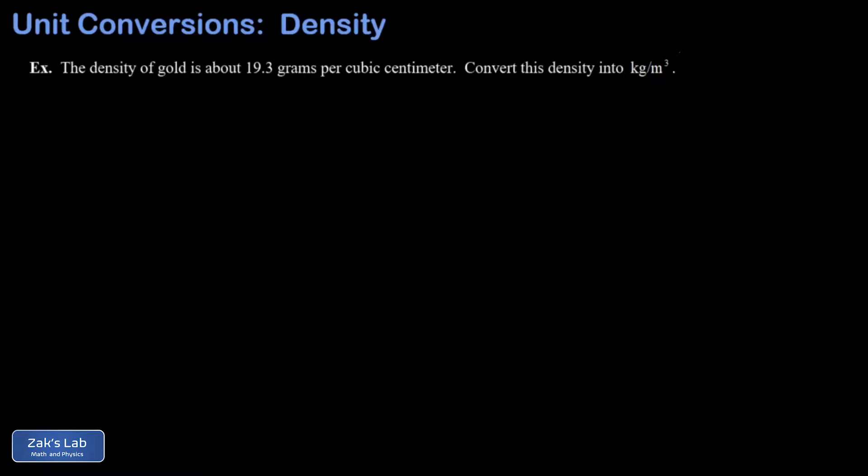In this video we're going to convert the density of gold from grams per cubic centimeter into kilograms per cubic meter. We're given that this density is 19.3 grams per cubic centimeter.